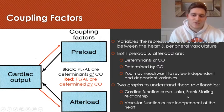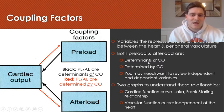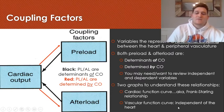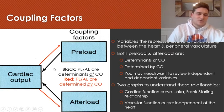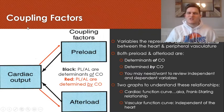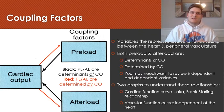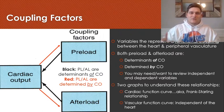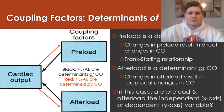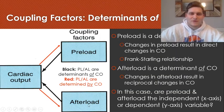These two relationships are expressed in two different graphs: the cardiac function curve, also known as the Frank-Starling relationship, which describes when preload is the determinant of cardiac output, and then the vascular function curve, which shows the effects of cardiac output on preload. We'll talk more about these graphs in future lectures, but today we're just going to break down the relationship between preload, afterload, and cardiac output.